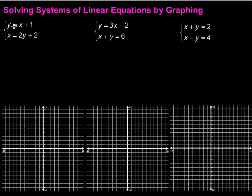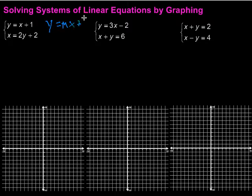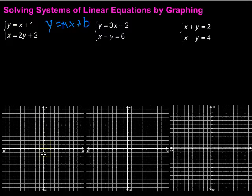If we want to graph equations on the coordinate plane, we should first get them into slope-intercept form so that we can just look at them and then graph. Remember, slope-intercept form is y equals mx plus b, so we need to solve for y. This first one, we have y equals x plus 1 — that's already in slope-intercept form.